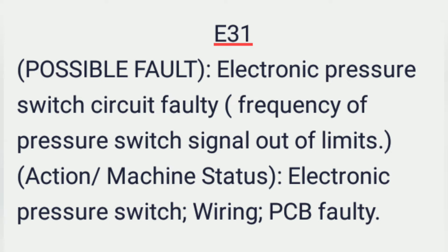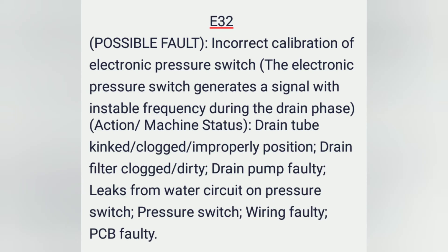E31 possible fault: electronic pressure switch circuit faulty — frequency of pressure switch signal out of limits. Action/machine status: electronic pressure switch wiring, PCB faulty. E32 possible fault: incorrect calibration of electronic pressure switch.